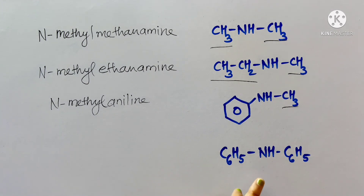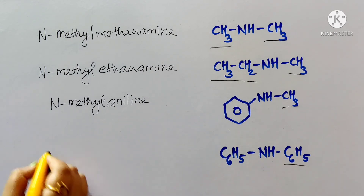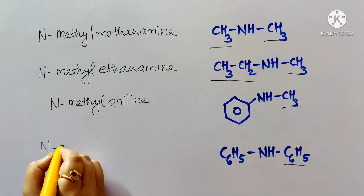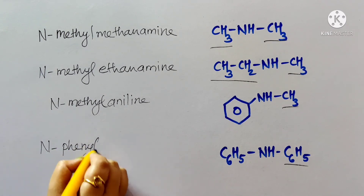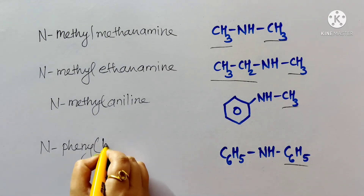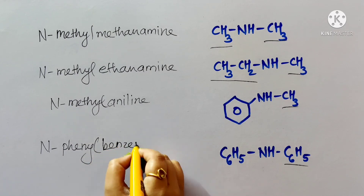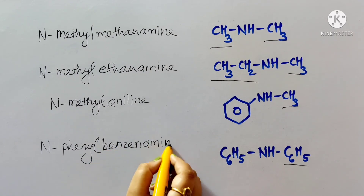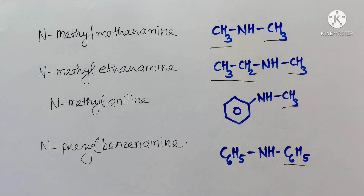When one methyl and one phenyl group are attached to nitrogen, the common name is methylphenylamine. For the IUPAC name, the methyl is taken as the N-substituent and the phenyl part is aniline or benzenamine, giving N-methylaniline or N-methylbenzenamine. For diphenylamine, one phenyl is the substituent and the other is benzenamine, giving N-phenylbenzenamine.